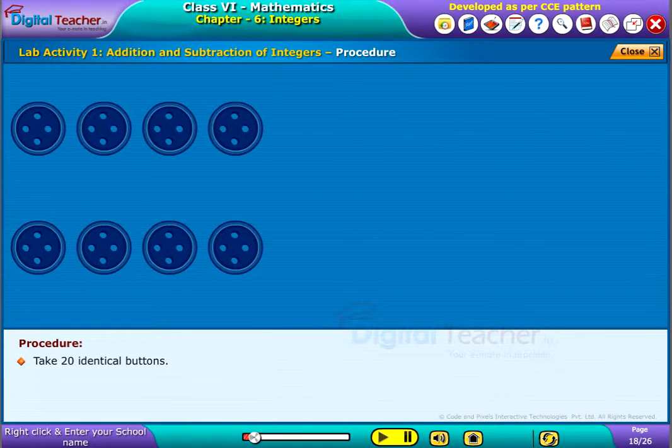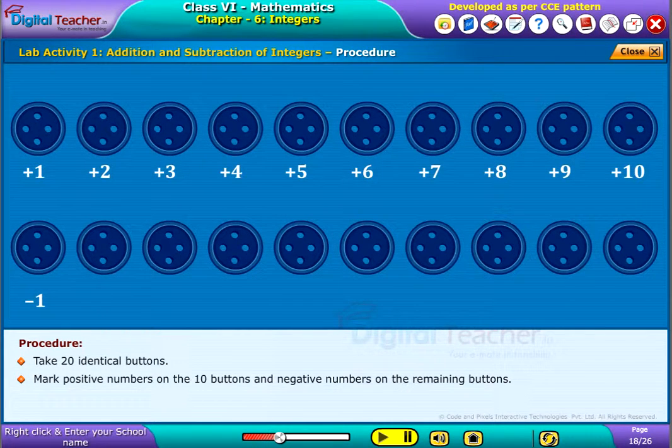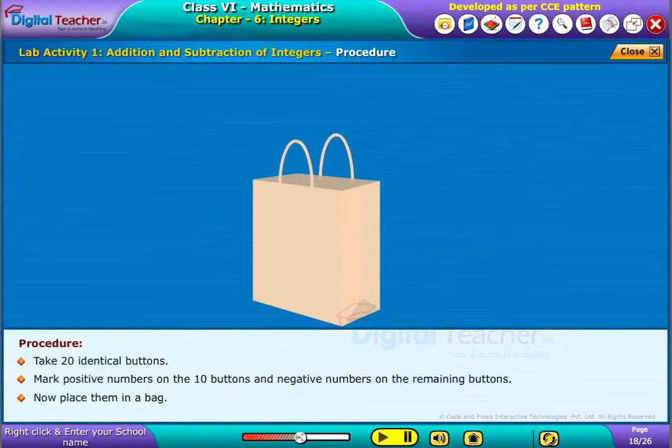Take 20 identical buttons. Mark positive numbers on the 10 buttons and negative numbers on the remaining buttons. Now place them in a bag.